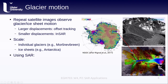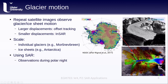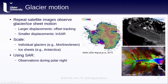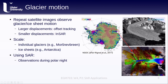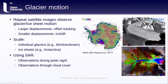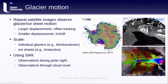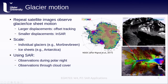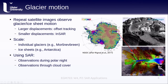When we use SAR images, we also get observations during the polar night, or during night in other areas of the world, as well as through cloud cover, which is especially useful when we're studying glaciers located either at the poles or in very cloudy regions.